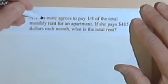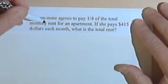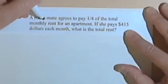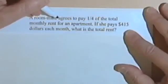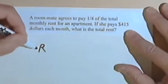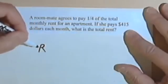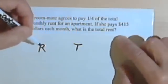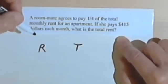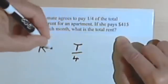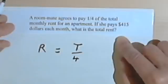Here's the last one. A roommate agrees to pay one-quarter of the total monthly rent for an apartment. So we have the roommate's share and the total amount. Let's use R for the amount the roommate is going to pay, and T for the total amount, but she's not going to pay the total amount. She's only going to pay one-fourth of the total. So she's paying the total divided by 4.